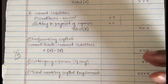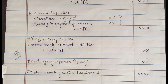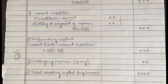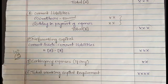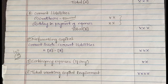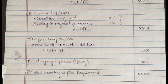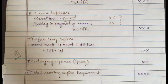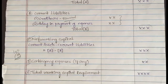By adding all these things in the outer column, we get the total working capital requirement. Estimation of working capital requirements is very simple. We have five parts: part A is current assets, part B is current liabilities, part C is net working capital which is A minus B, part D is contingency expenses which is a percentage of net working capital, and part E — the fifth part — is the total working capital requirement, obtained by adding all these things.